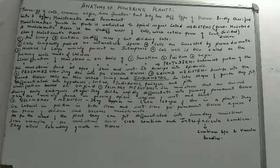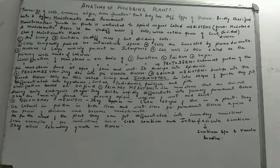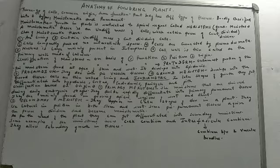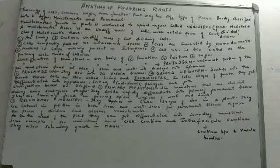The last characteristic of meristematic tissue: the cell wall is very thin and is called the primary wall. It is made up of cellulose. To summarize the characteristics: all cells are living; undifferentiated mass of continuously dividing cells; cells compactly packed with no intercellular spaces; cells connected by plasmodesmata; nucleus is large; and cell wall is thin, made of cellulose, known as the primary wall.